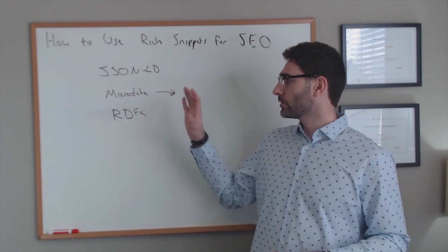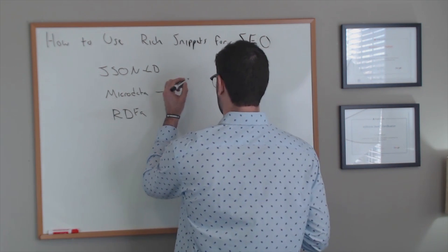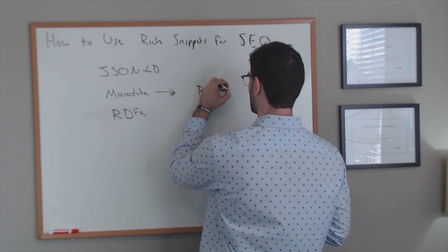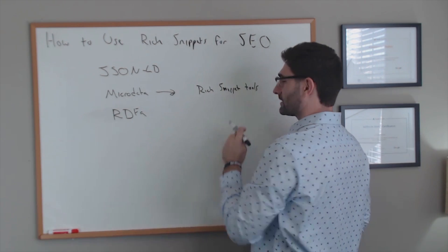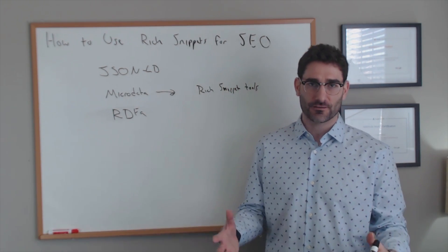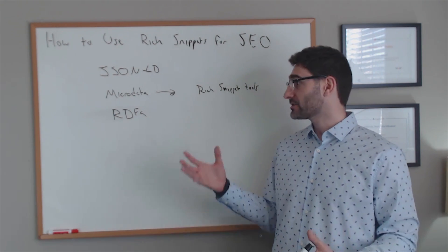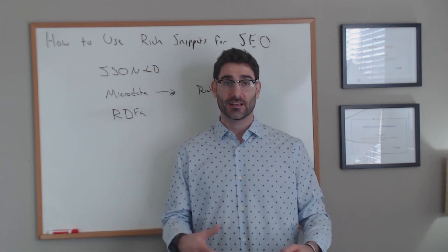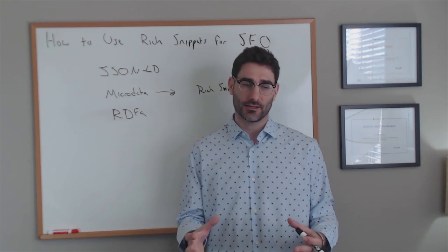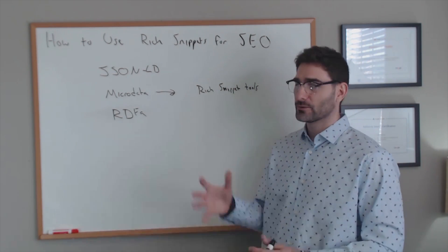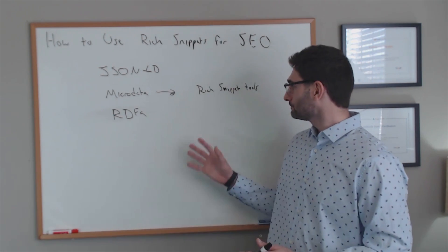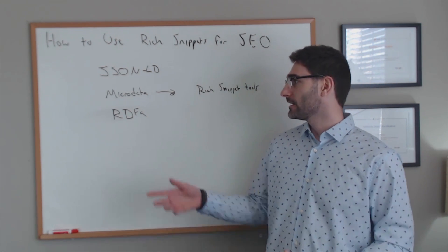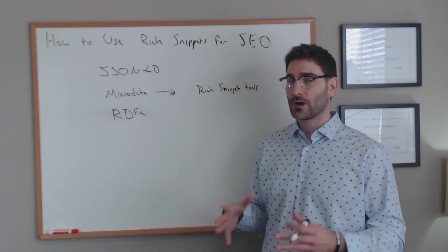Once you have your code type picked out, you can generate a rich snippet by using simple rich snippet tools online. These tools allow you to enter in your information for whatever type you need. In this video, I'm going to show you how to add a local business rich snippet to your website, which will help you get more local visitors because Google will know your website's location, name, and address from the rich snippets we're going to add. You can use a simple rich snippet tool to enter your information and it will spit out any one of these code types.